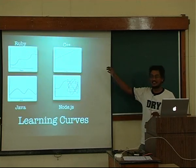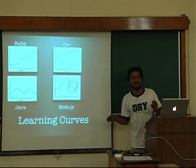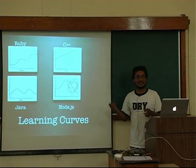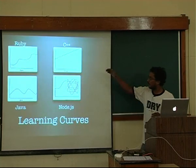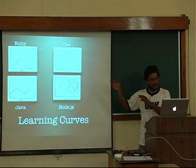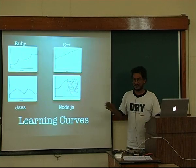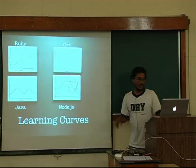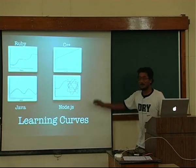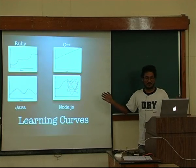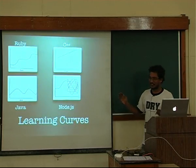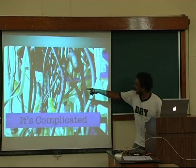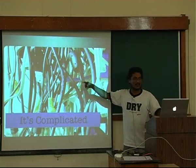So this is my version of learning curves. Ruby is very nice and easy — beginners can start off easily, then they hit the curve where they start following conventions, then metaprogramming, and it's all nice. C++ is like every day you learn something new. And then Node.js — I don't really understand. It's just confusing async programming. It's really a fuzzy mess.